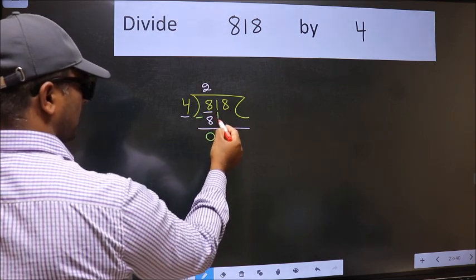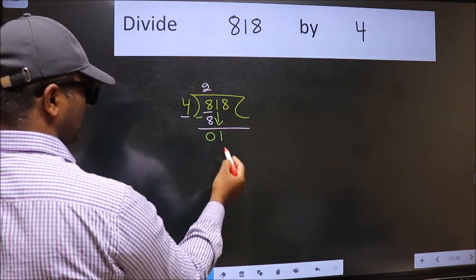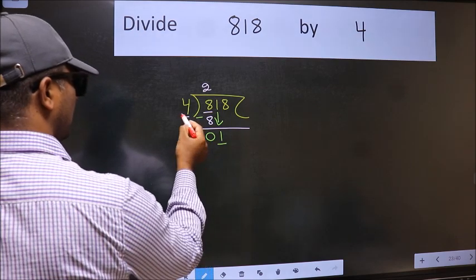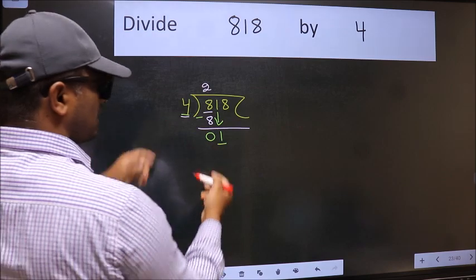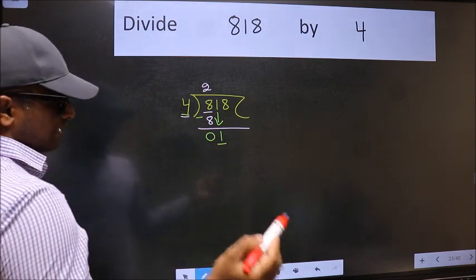After this, bring down the beside number. So 1 down. Now here we have 1 and here 4. 1 is smaller than 4. So we should bring down the second number.